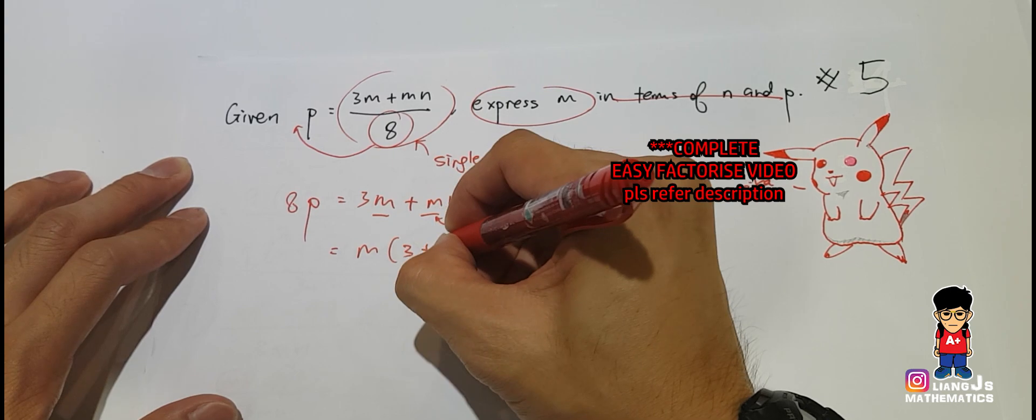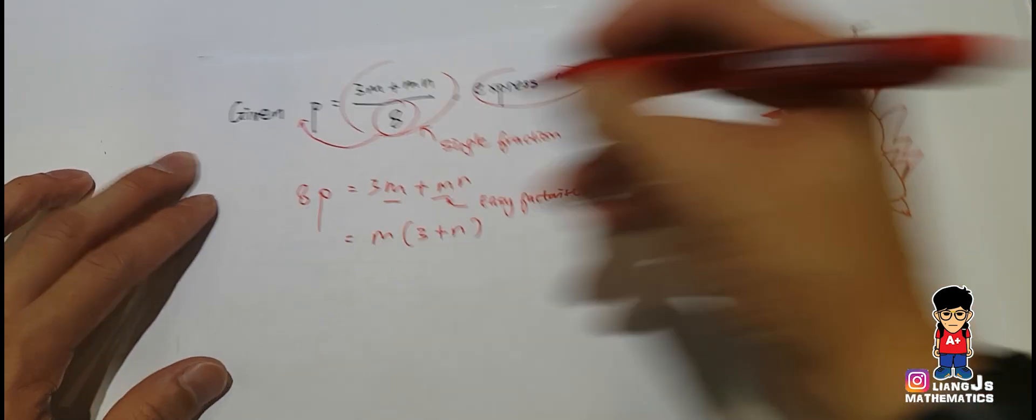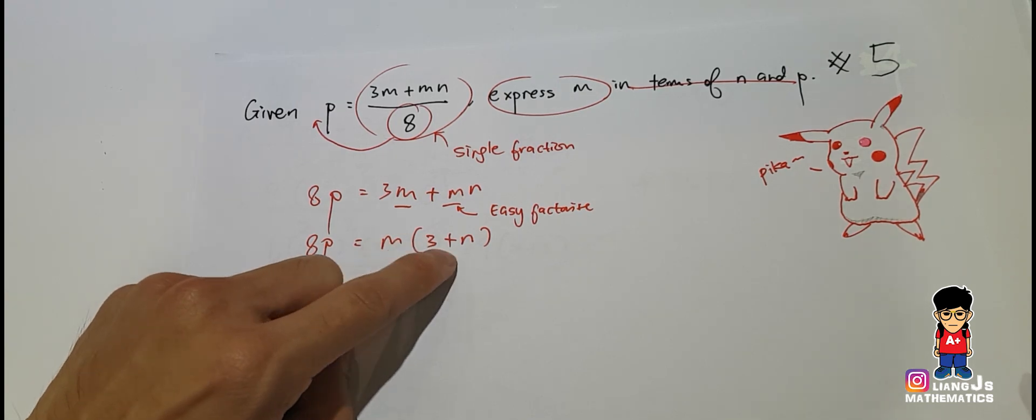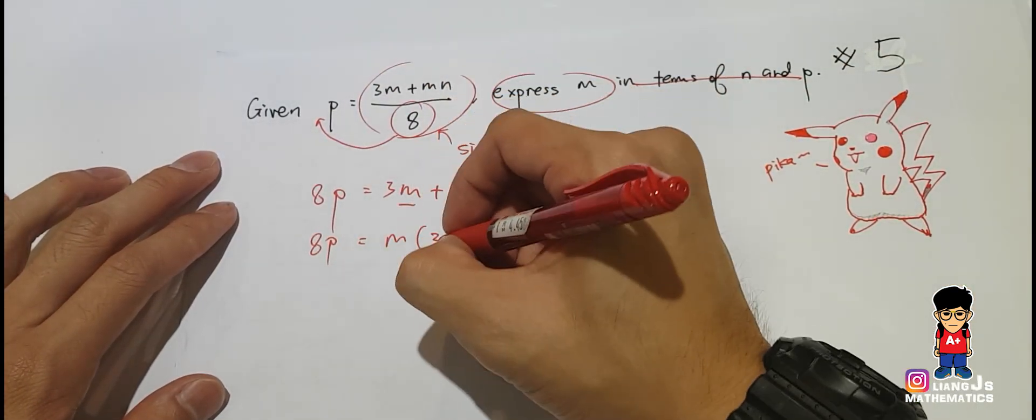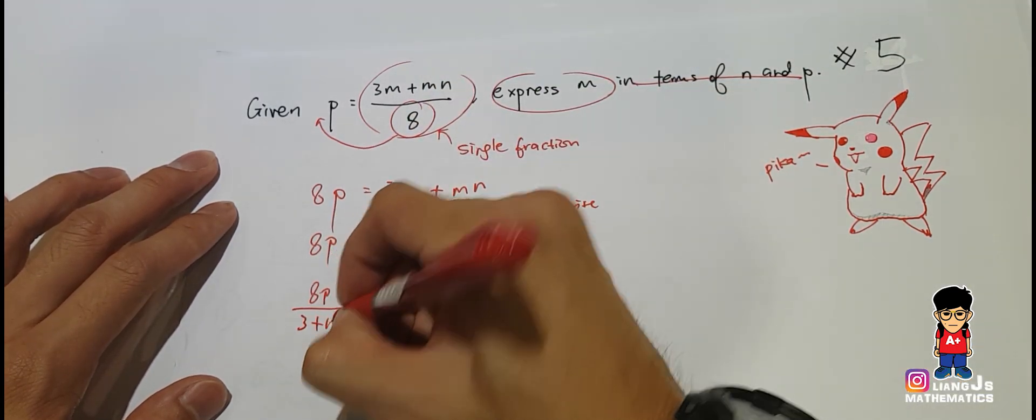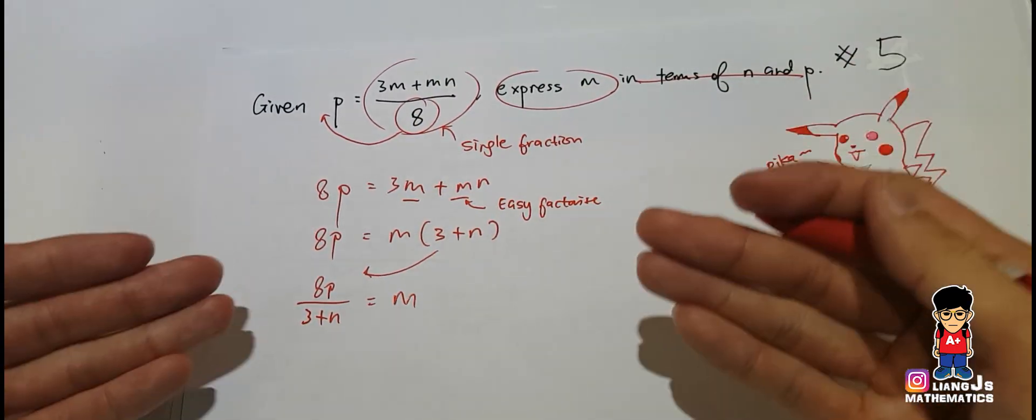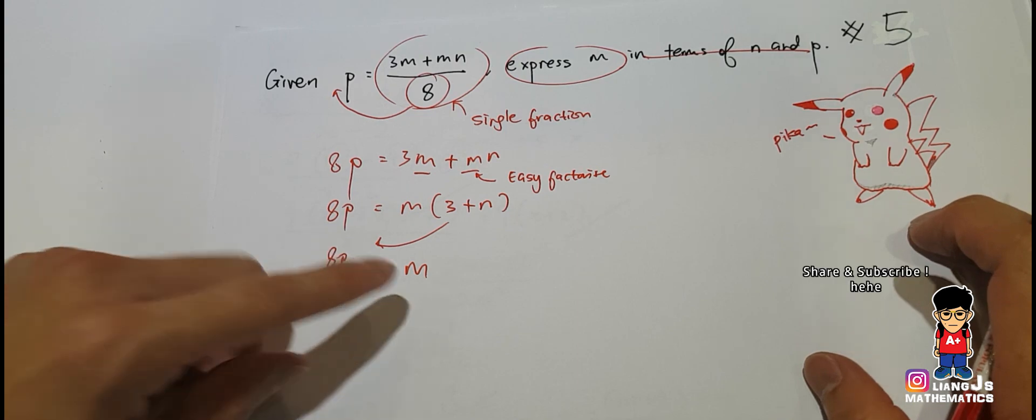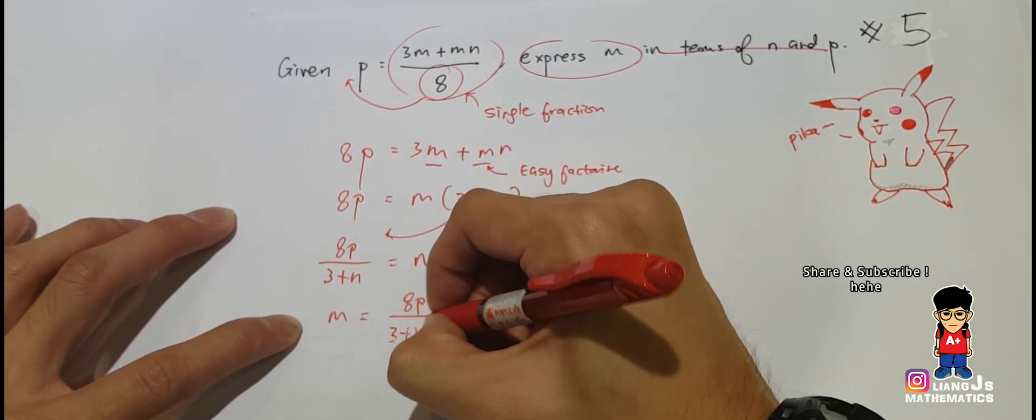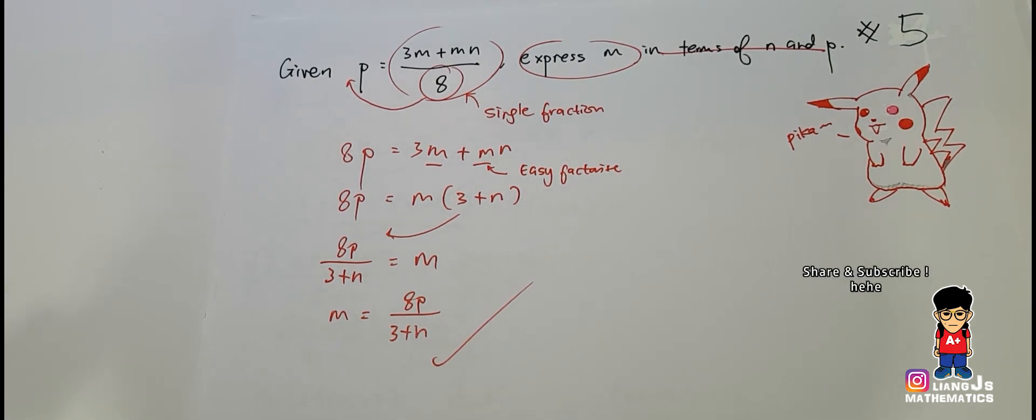You're left with 3 plus n inside the bracket. Since I want m, the bracket becomes times. Bring it to the other side, you get divide, so 8p over 3 plus n equals m. You have to make sure your m subject is on the left, so m equals 8p over 3 plus n. This is your answer.